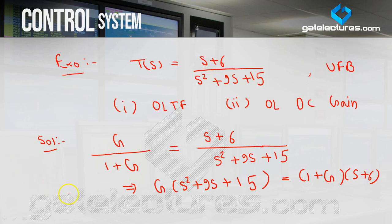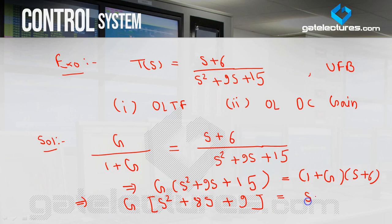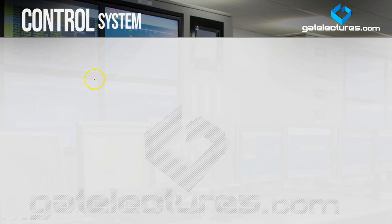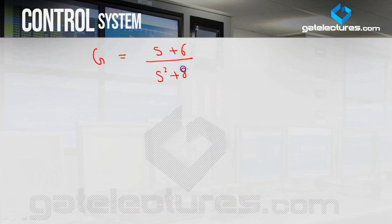Completing the calculation: take G common — G·(S²+9S+15) minus G·(S+6) = (S+6). So G·(S²+9S+15 − S−6) = S+6, giving G·(S²+8S+9) = S+6. Therefore the open loop transfer function G = (S+6)/(S²+8S+9).